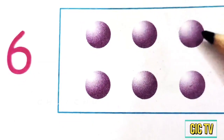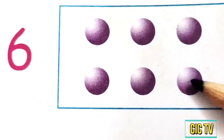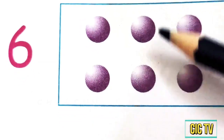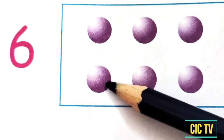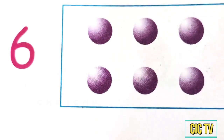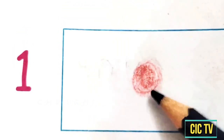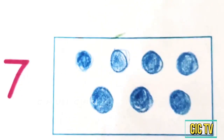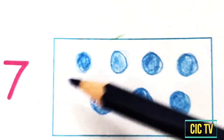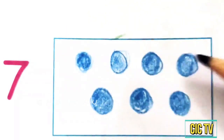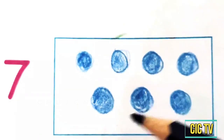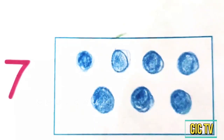6. 1, 2, 3, 4, 5, 6. 1. 1 dot. 7. 1, 2, 3, 4, 5, 6, 7.